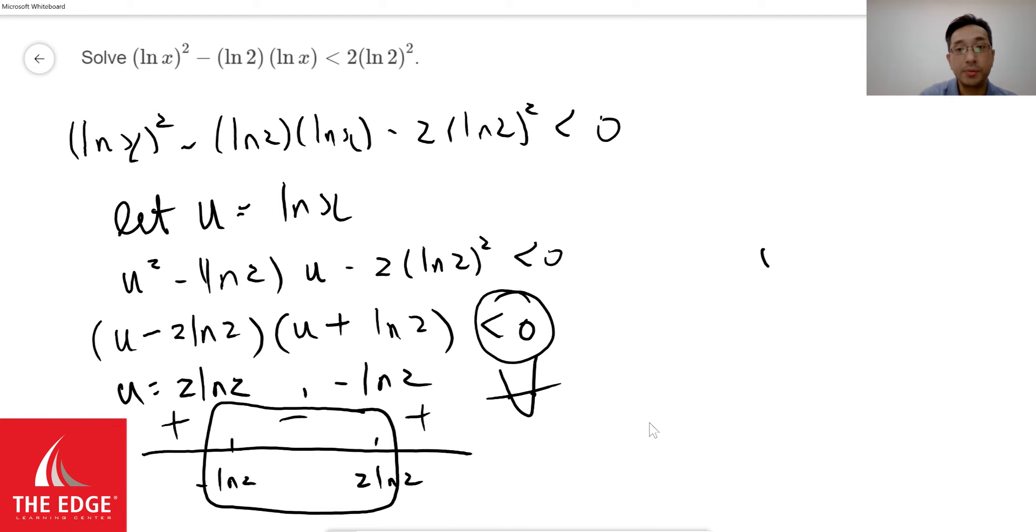In other words, we're now able to write that u must be in this case between negative ln of 2 and 2 ln of 2.